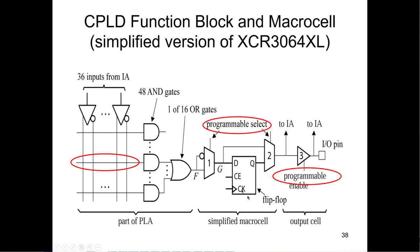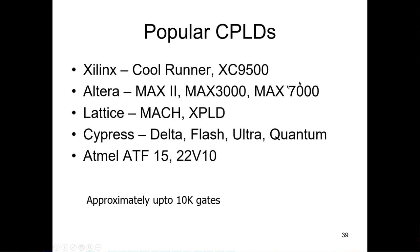All this is programmable, and the interconnect matrix is also programmable. There's the output cell. These CPLDs are available from Xilinx (CoolRunner), Altera (Max 2, 3000, 7000), Lattice (Mach, XPLD), Cypress, and Atmel (ATF 15 and 22V10). They have about 10,000 gates — that's the largest CPLD. Ten thousand gates is a lot of programmable logic, though nowadays it looks like a drop in the bucket compared to a million gates or more in a big FPGA.